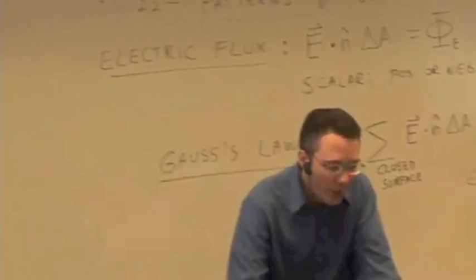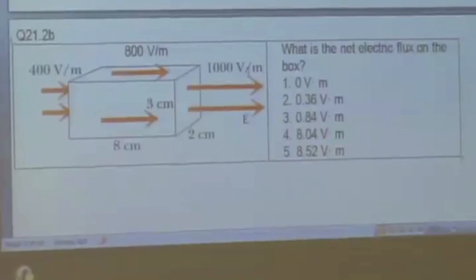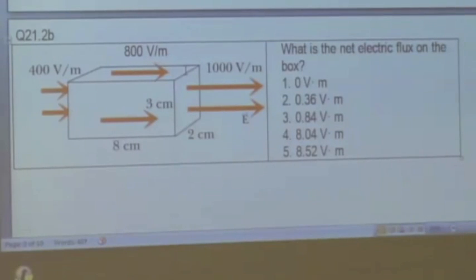Okay, so here's kind of an arbitrary example. Let's say we have over the right side of this box an electric field pointing to the right, magnitude of 1,000 volts per meter. Top, bottom, front, and back, let's assume the electric field is the same over those surfaces of 800 volts per meter, again pointing to the right. And on the left side, the electric field is 400 volts per meter, again pointing to the right. Here's the dimensions of the box: 3 centimeters high, 2 centimeters deep, 8 centimeters long. See if you can calculate the net electric flux over the entire surface. So we have essentially six surfaces to think about: front, back, top, bottom, left, and right. You want to find the flux on each surface, add them all up to get the total.